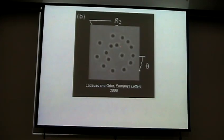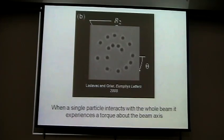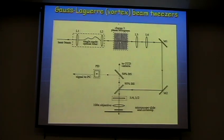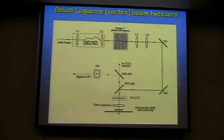Some people have sorted particles by size using this method. You can also study colloidal solutions and forces between particles very carefully. When a single particle interacts with the whole beam, it experiences a torque about the beam axis. We produce Gauss-Laguerre beams using computer-generated holograms on holographic plates with high resolution. The hologram looks like a dislocation — the number of forks in the middle determines the Gauss-Laguerre charge.